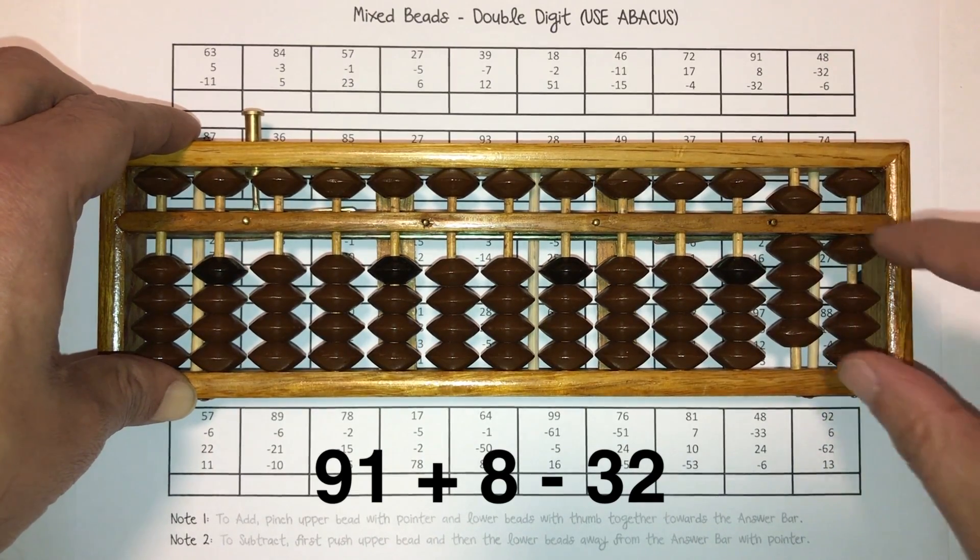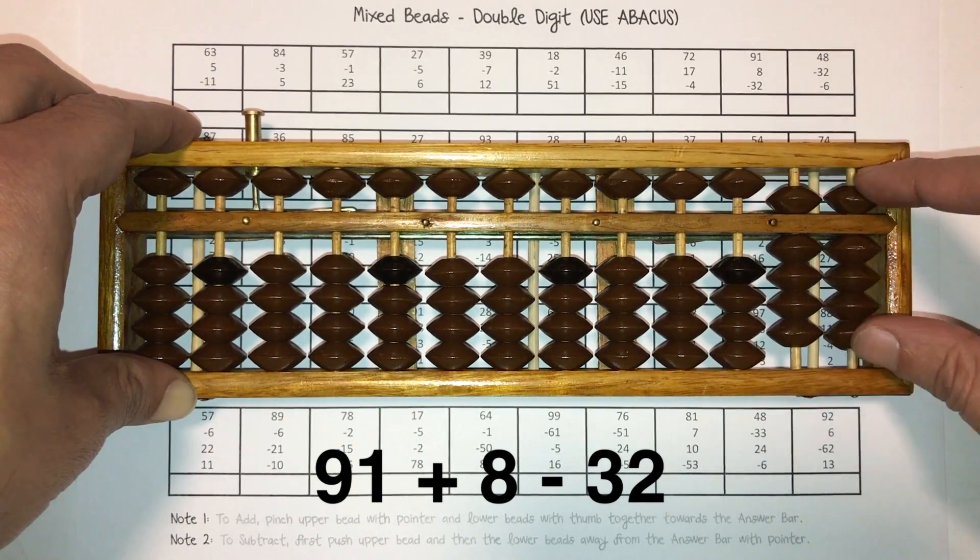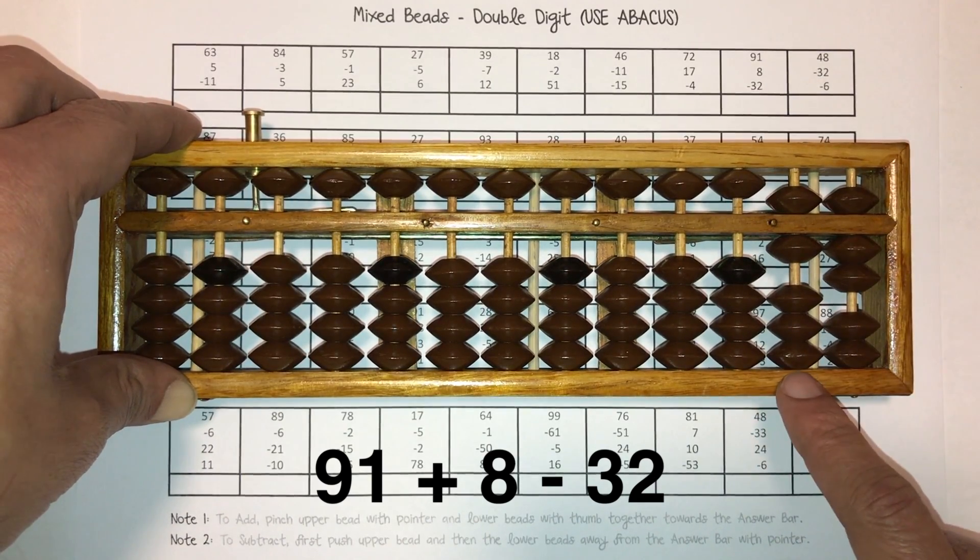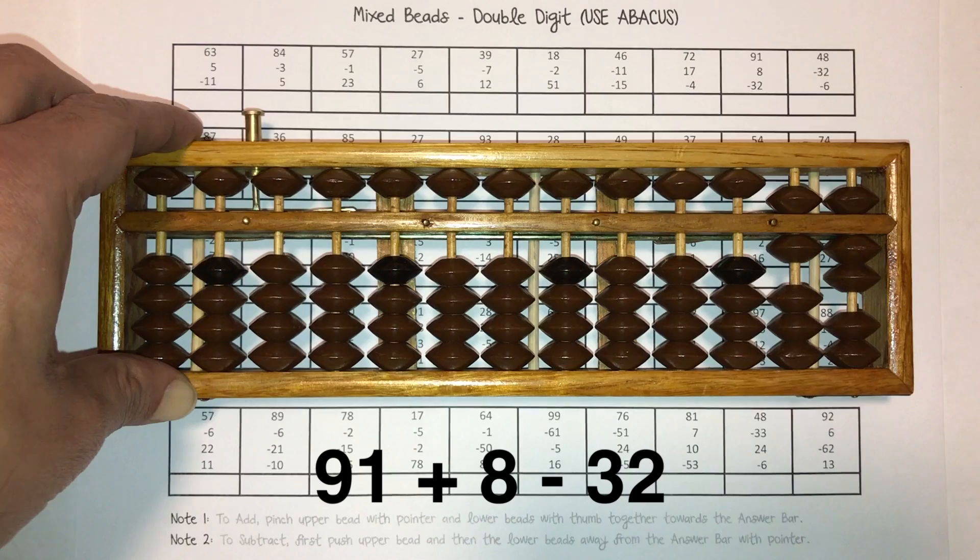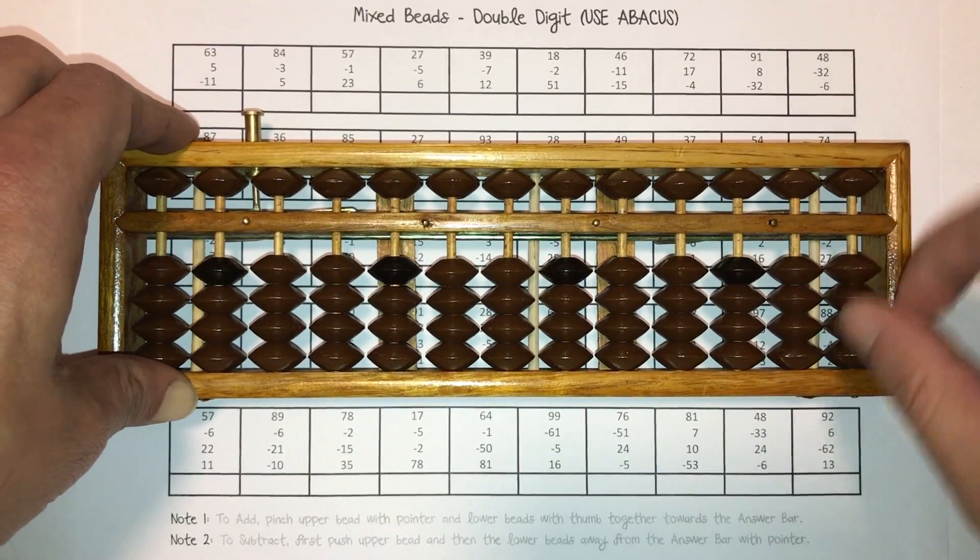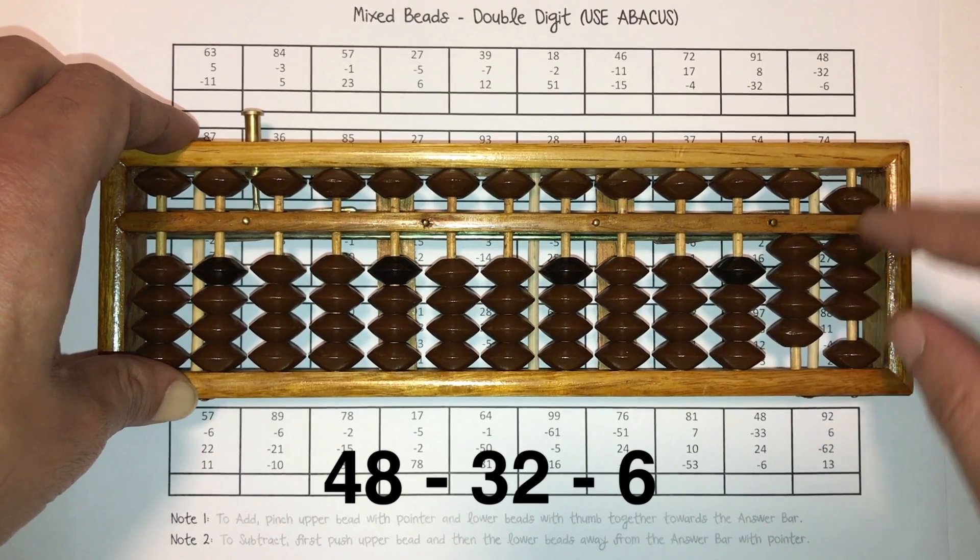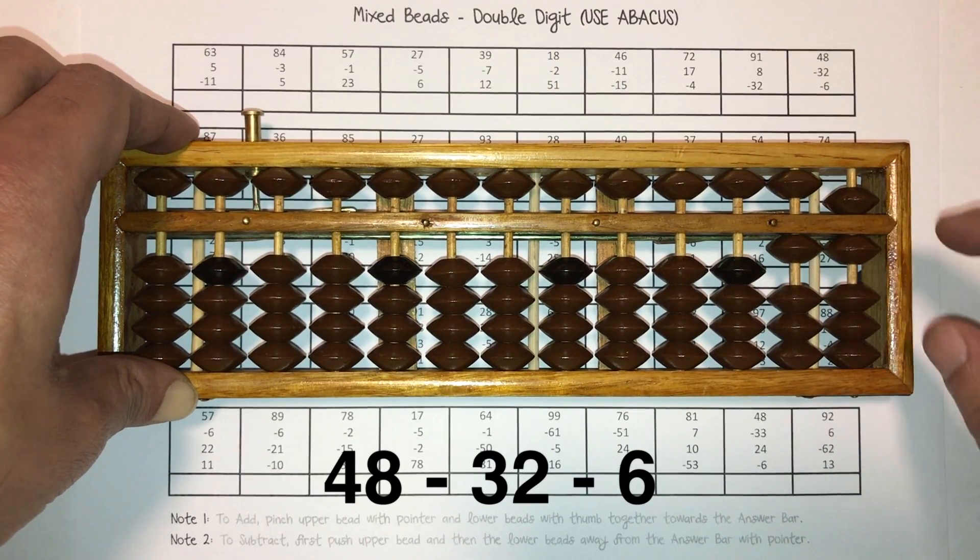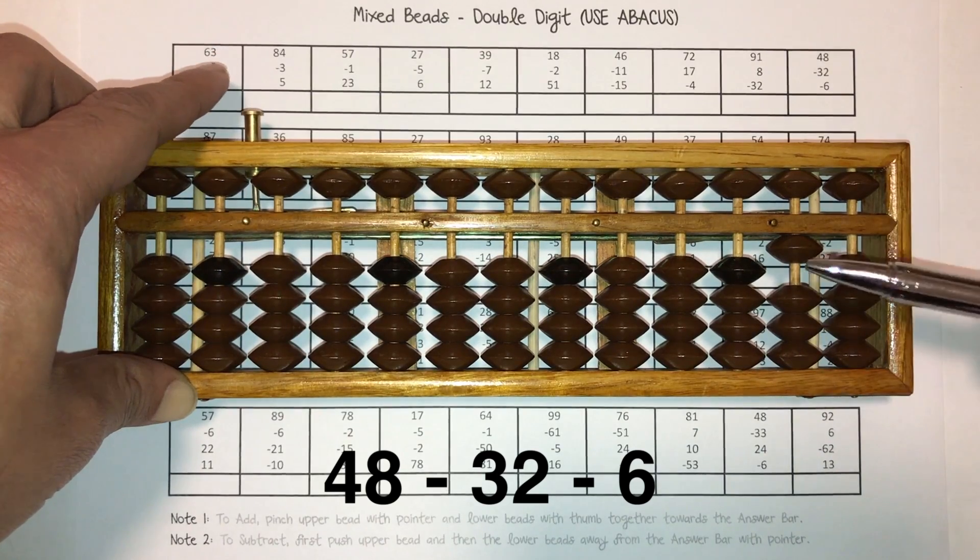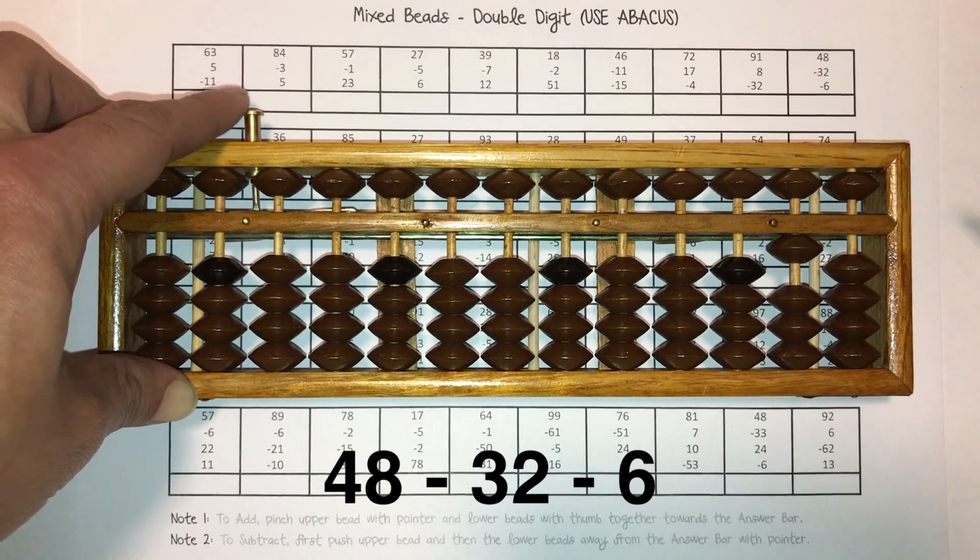90, pinch the nine together and one. 91 plus eight, pinch the eight together, minus 32. Answer is 67. 67 goes right there. Clear the abacus. Next, 48 minus 32 minus six. Answer is 10. 10 goes right there. Good.